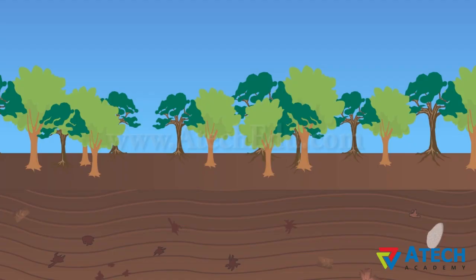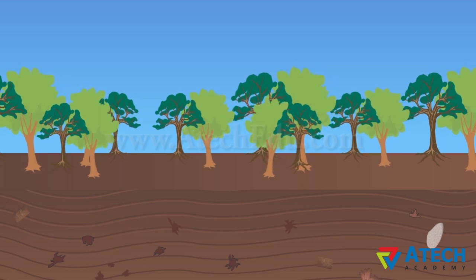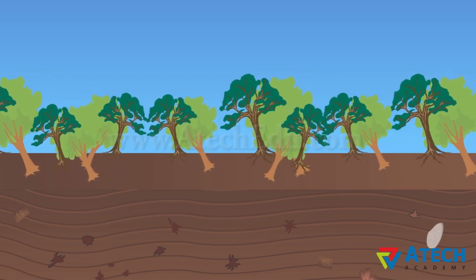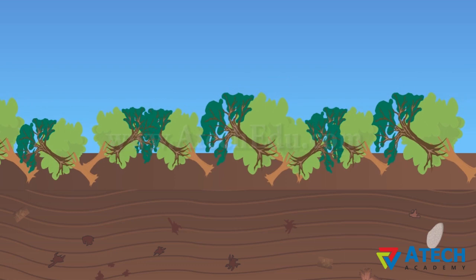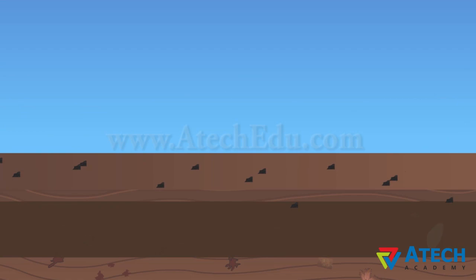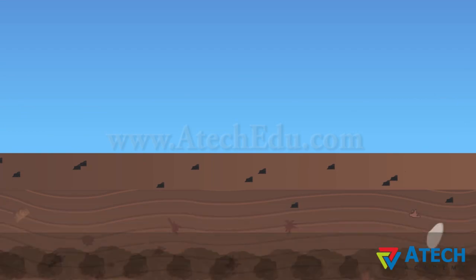Some 300 million years ago, the dense forests in low-lying wetland areas got buried under the soil due to natural processes like flooding. As more soil deposited over them, they were compressed. This led to the rise of temperature and pressure, because of which dead plants got slowly converted to coal.